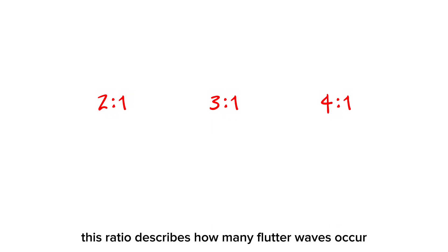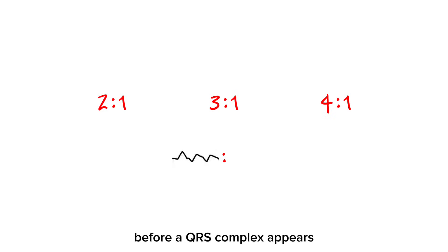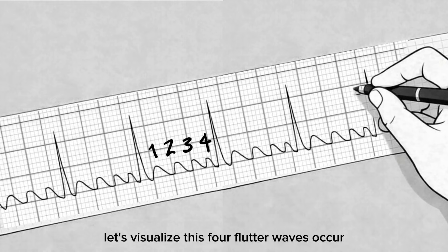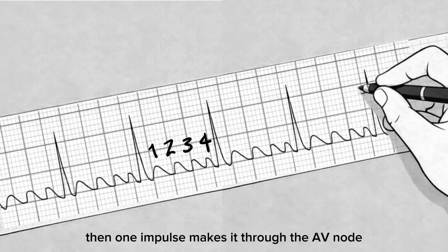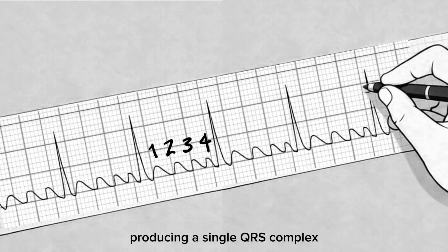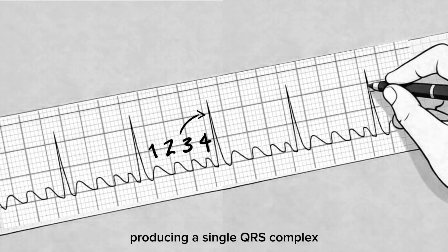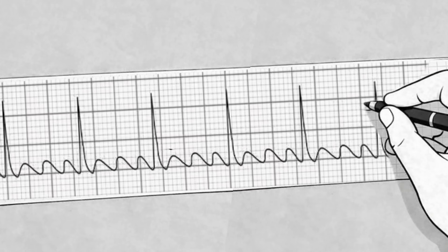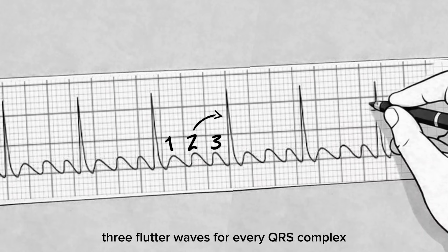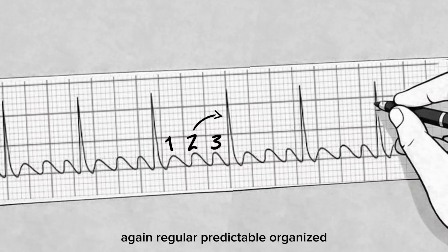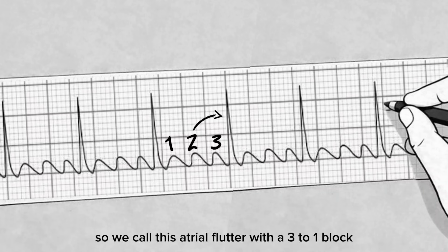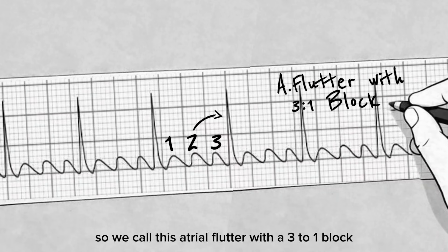This ratio describes how many flutter waves occur before a QRS complex appears. For example, four flutter waves occur, then one impulse makes it through the AV node producing a single QRS complex — we call this atrial flutter with a 4-to-1 block. Three flutter waves for every QRS complex — regular, predictable, organized — we call this atrial flutter with a 3-to-1 block.